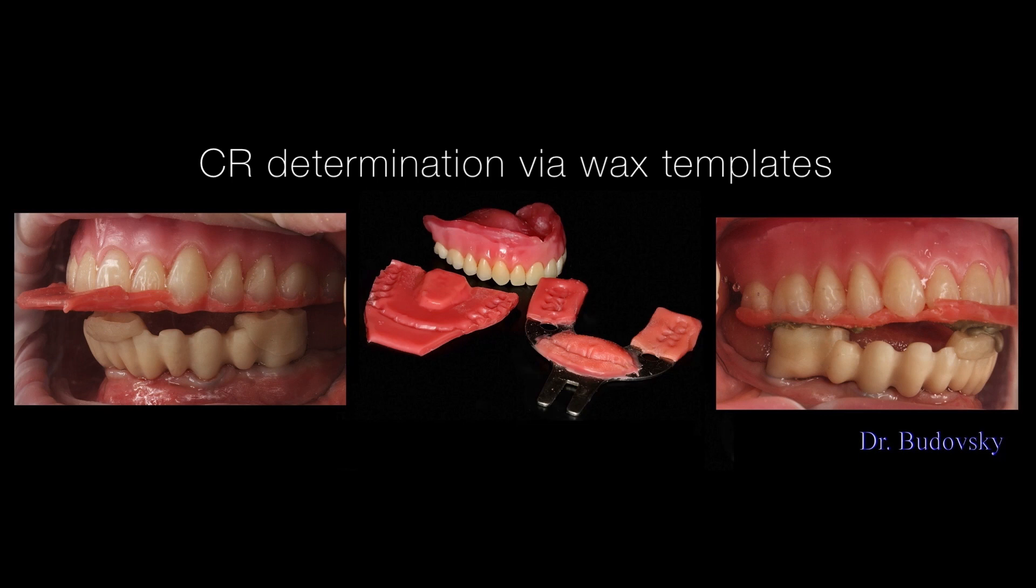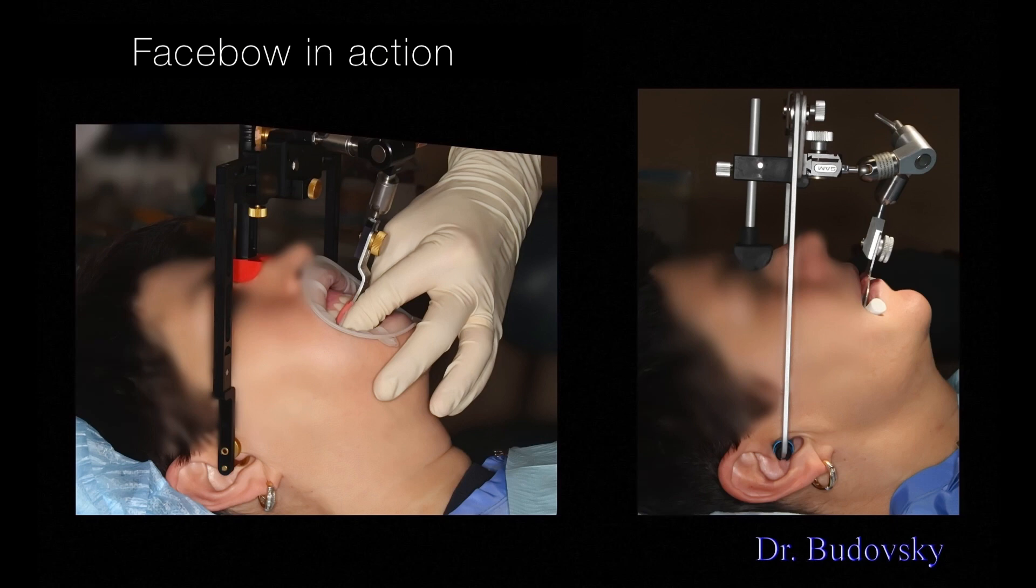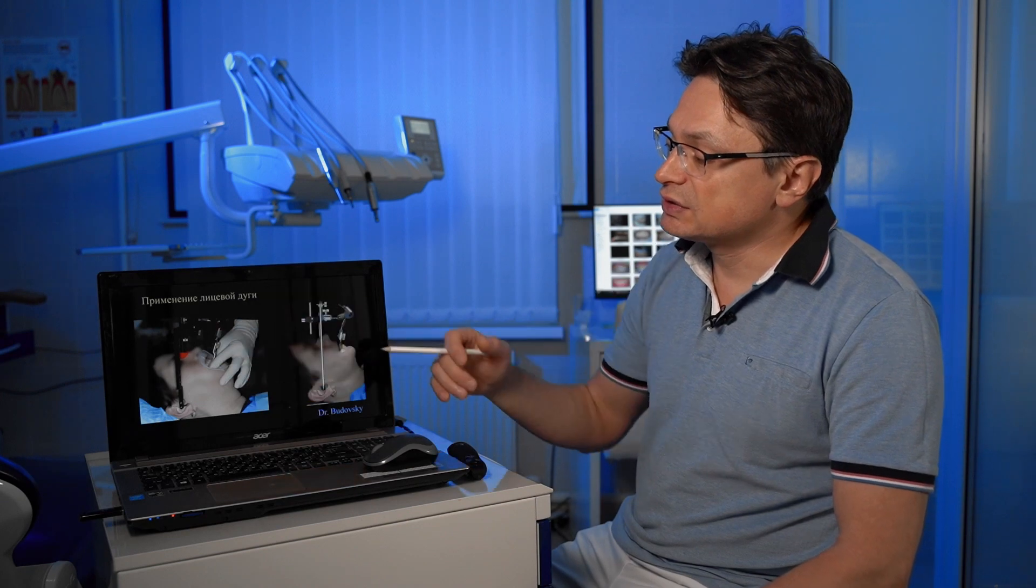Definitely, it is a registration of the position of the upper jaw with a face bow, and as you can see, we make some registers of central relations. There wasn't one register, as we did our work in several articulators, we needed several registers.